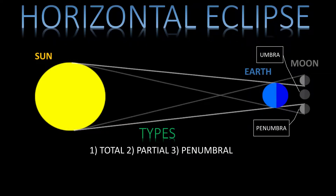A horizontal eclipse is when both the sun and the eclipsed moon can be observed at the same time. This can only happen at sunset or sunrise and at certain elevations. The horizontal eclipse can only be observed on earth.